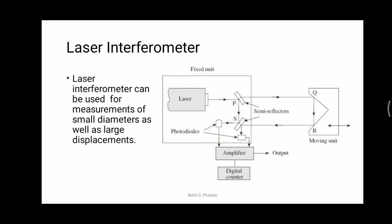The second path of the laser beam goes from P to Q, then reflects 90 degrees to reach the next semi-reflector R. This complete block is known as the corner cube. From R, the beam travels back towards semi-reflector S, where it recombines, and the output from S is given to the second photo diode.